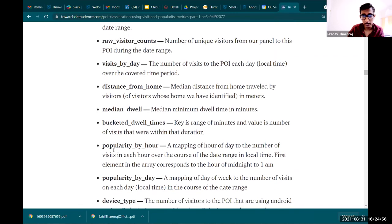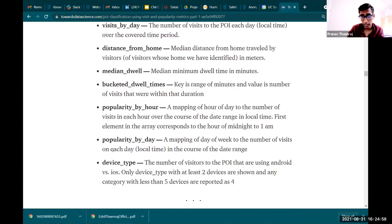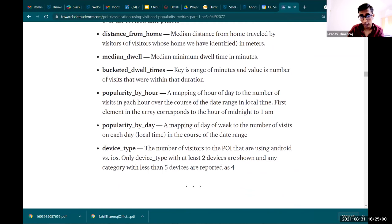Like here. Raw visit counts, raw visitor counts, visitors by day, distance from home, median dwell, bucketed dwell times, popularity by hour, popularity by day, and device types. So some of these, like median dwell and bucketed dwell times, those would be exploded from JSON columns, and we exploded them into multiple columns. So essentially, that's why the number of features came out to be so high.